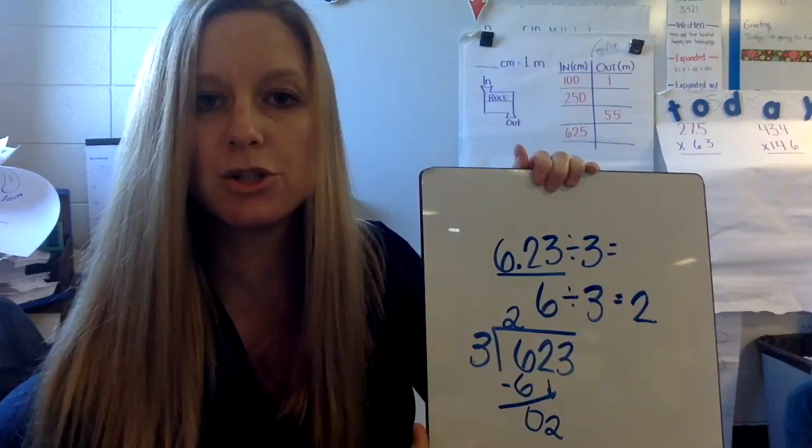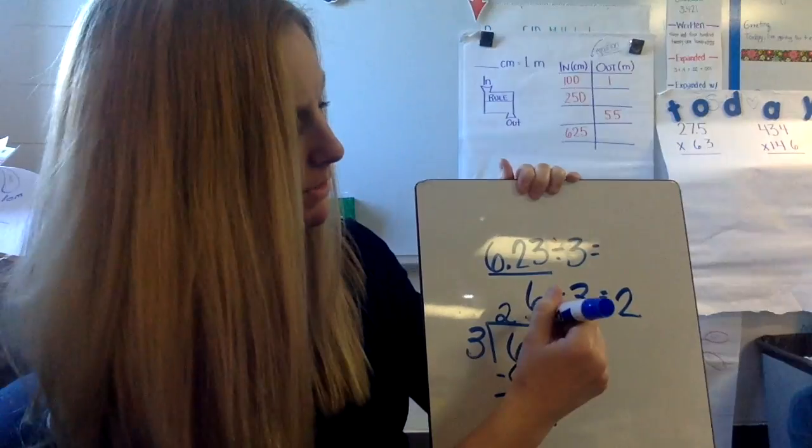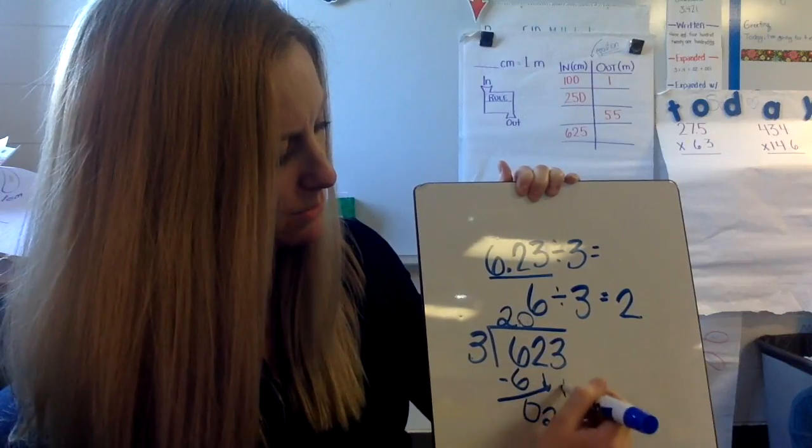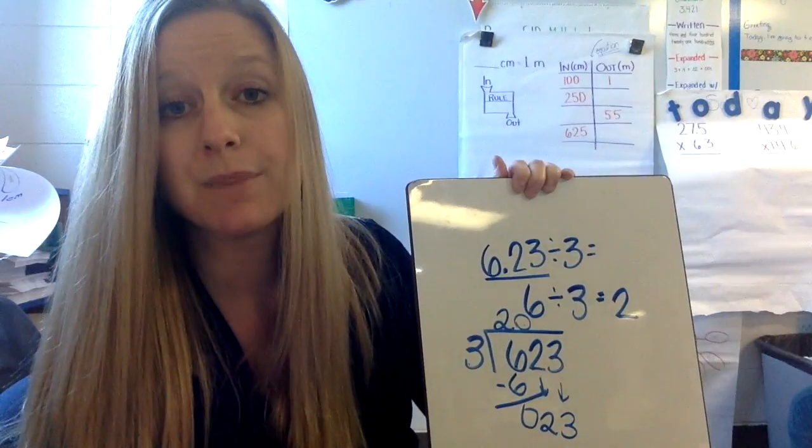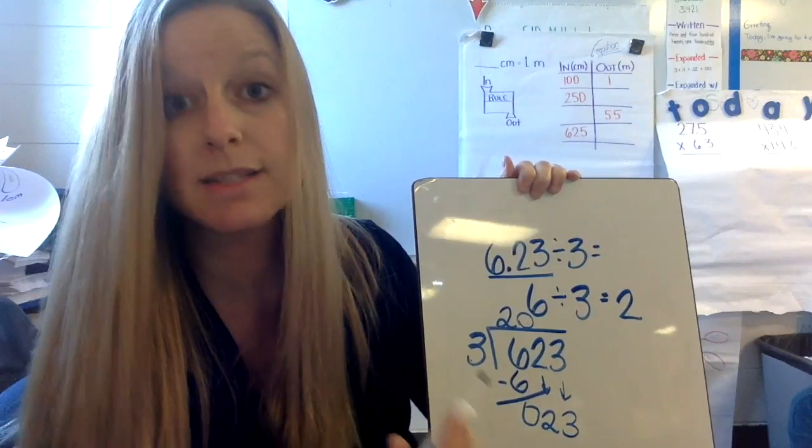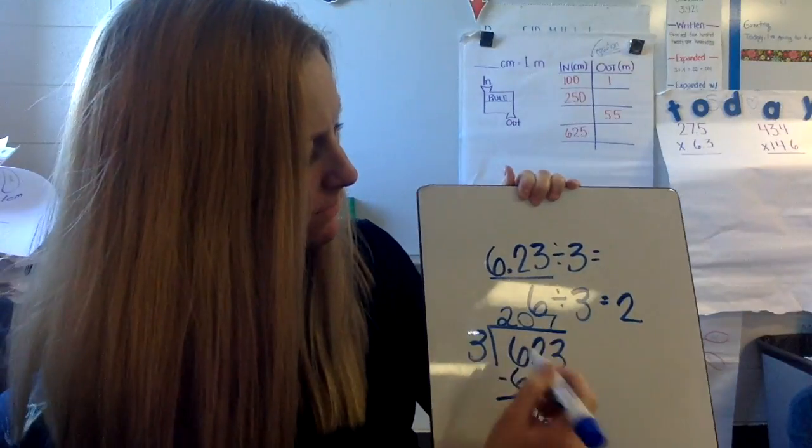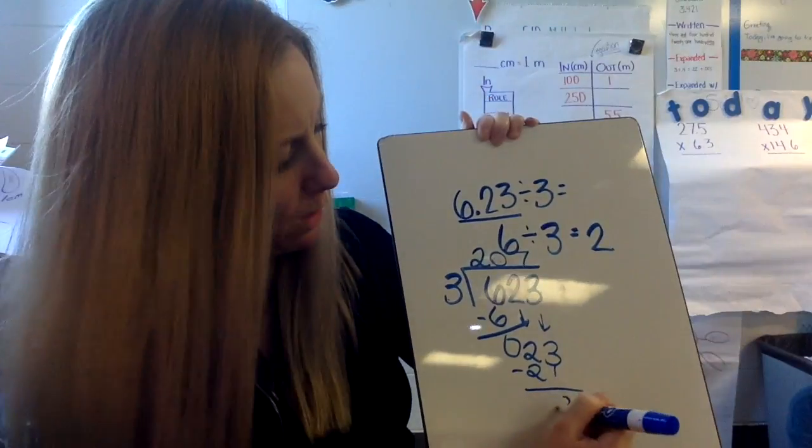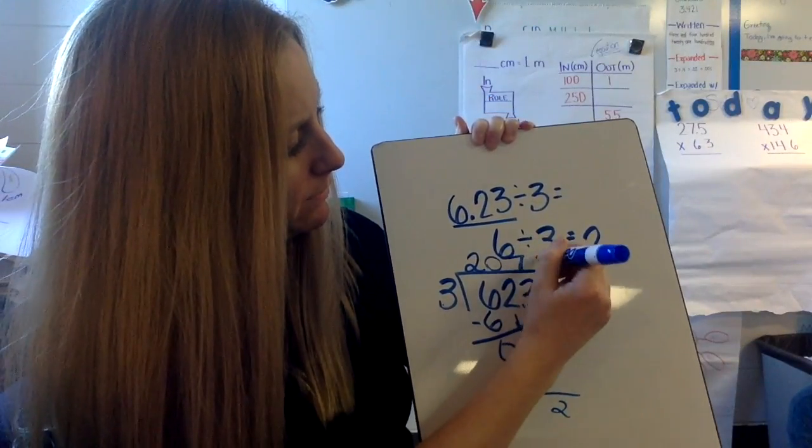Then I say, well how many times does 3 go into 2? 0. So I stick a 0 at the top. 0 times 3 is nothing, so I just go to the next one. I drop down this number. Now I have 23. How many times does 3 go into 23? 7. Okay, so I multiply that and then I have a remainder of 2.